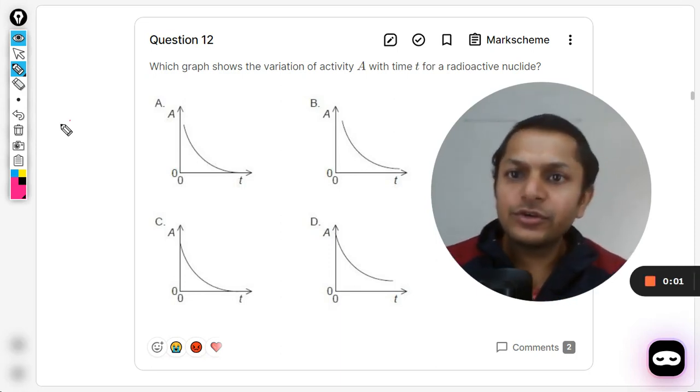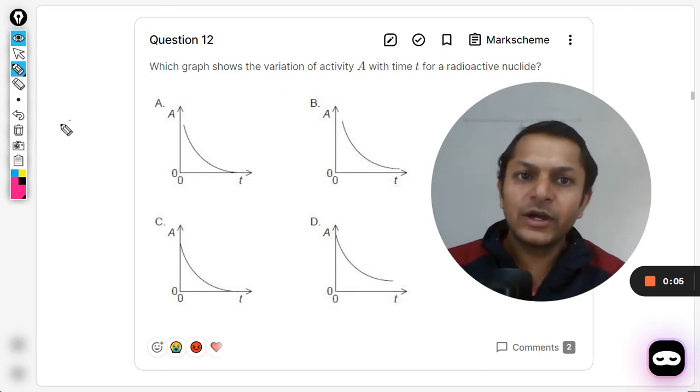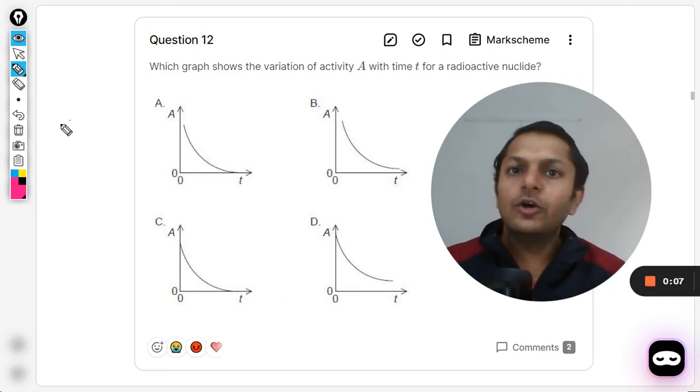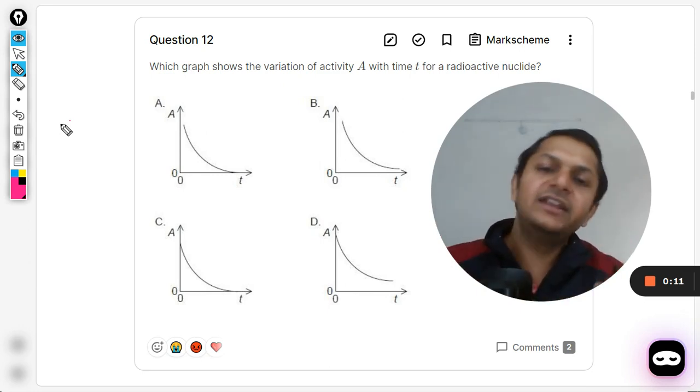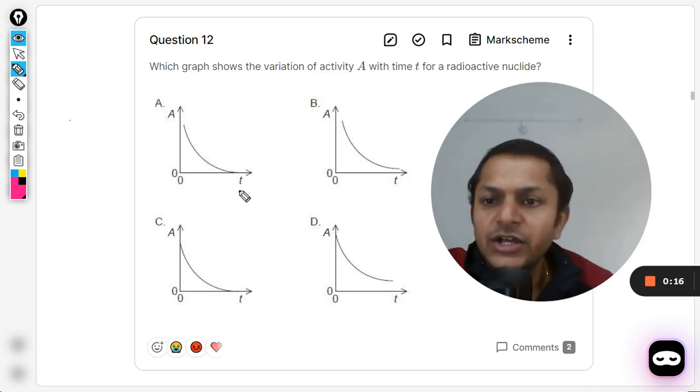Okay dear students, let us see what is there in this question. Which graph shows the variation of activity with time t for radioactive nuclei? In a couple of videos earlier we have already discussed activity in great detail. You can watch that also, but in this video I would be discussing a bit here.